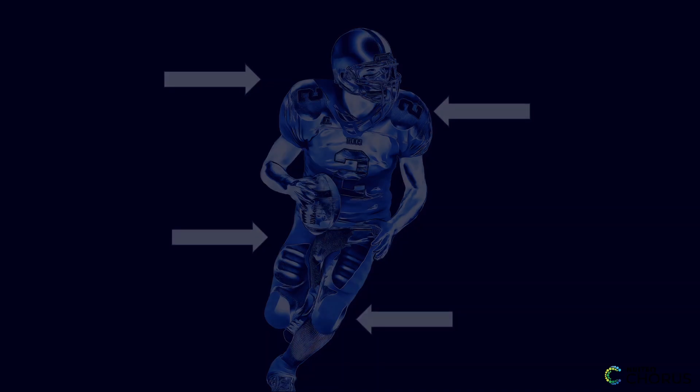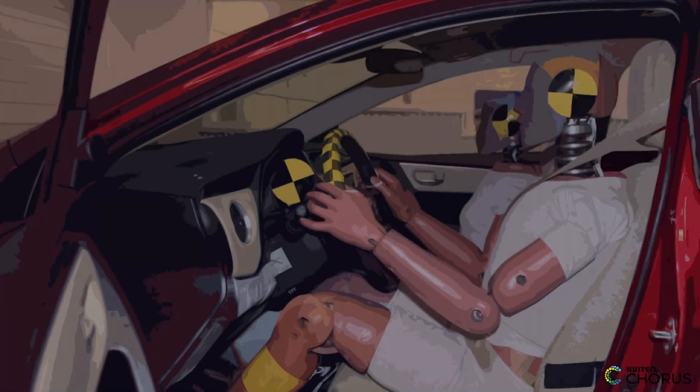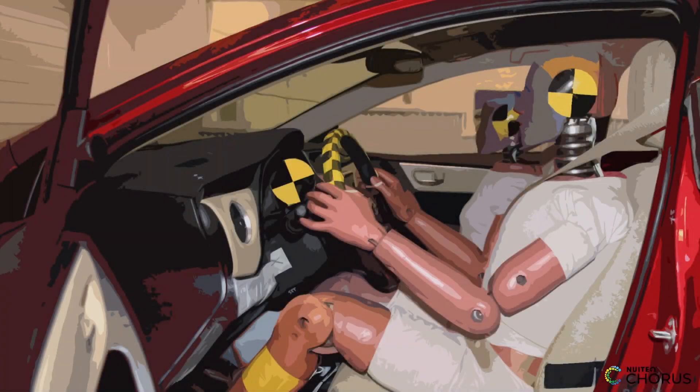Example number three: in automotive safety, crash test dummies help engineers test car bumpers and crumple zones. By analyzing how impact forces affect the dummy, they can improve car designs to protect passengers during a collision.